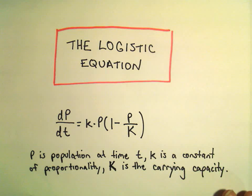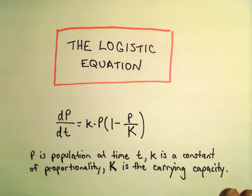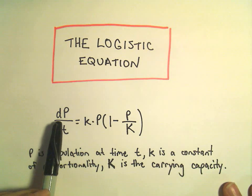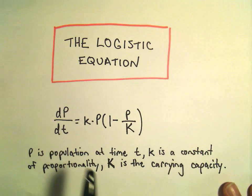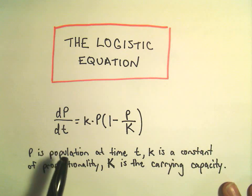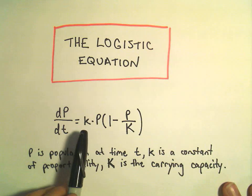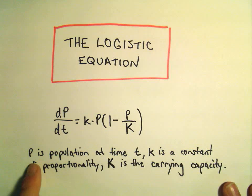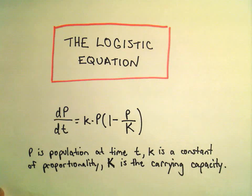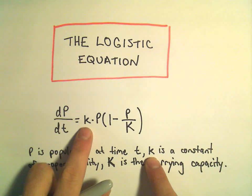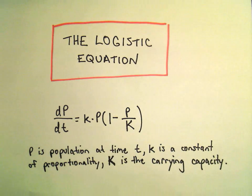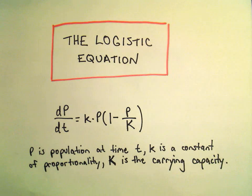In this video I'm going to talk about the logistic equation, and we're going to find what's called the analytic solution to this differential equation. It says the change in p with respect to t — you can think about p as being population. The change in population with respect to time equals little k times p times 1 minus p over big K. Here p is the population at some time t, little k is a constant of proportionality, and capital K is the carrying capacity — the number of objects the environment can support.